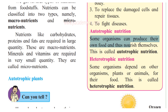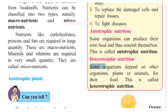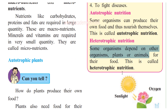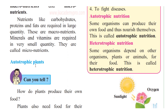Some organisms can produce their own food and thus nourish themselves — this is called autotrophic nutrition. Plants are the best example; they produce their own food. However, there are organisms that depend on other organisms for food. Some plants do not produce their own food, and animals depend on plants as well as other animals for food. Such organisms are said to have heterotrophic nutrition.